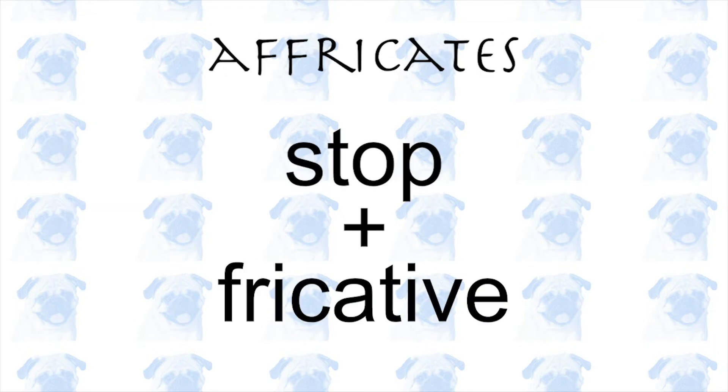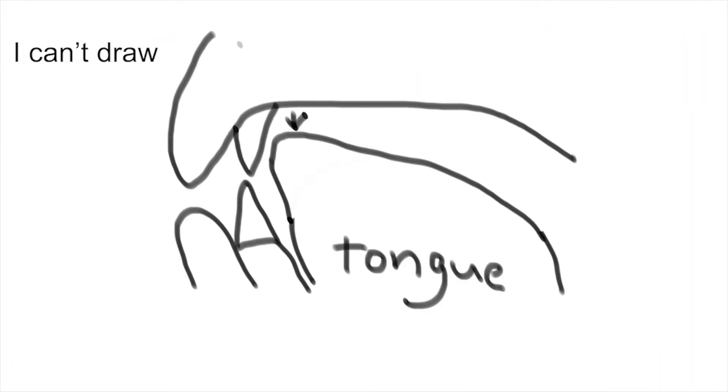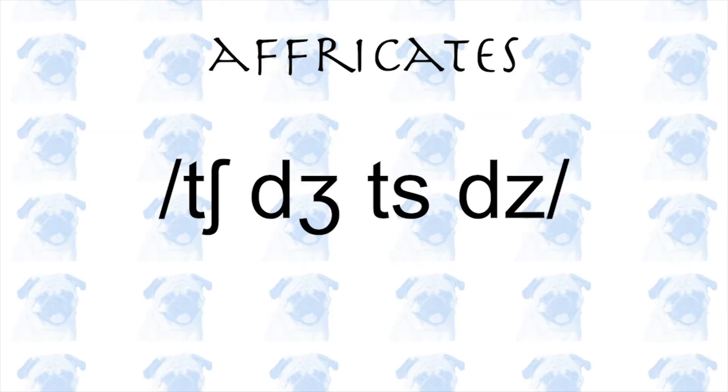Affricates, on the other hand, are a combination of stops and fricatives. You create a blockage in your oral cavity and then release the blockage slightly so that the airstream can exit, creating a high-frequency fricative noise. In English, there are 4 affricates.